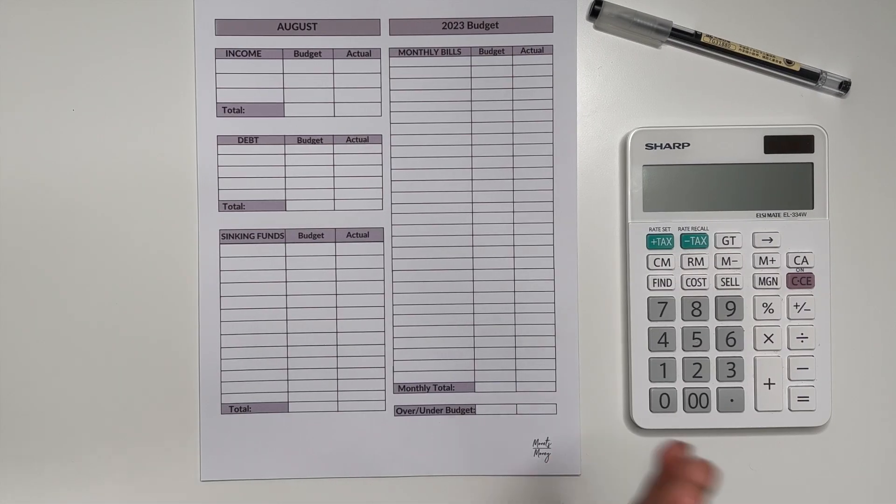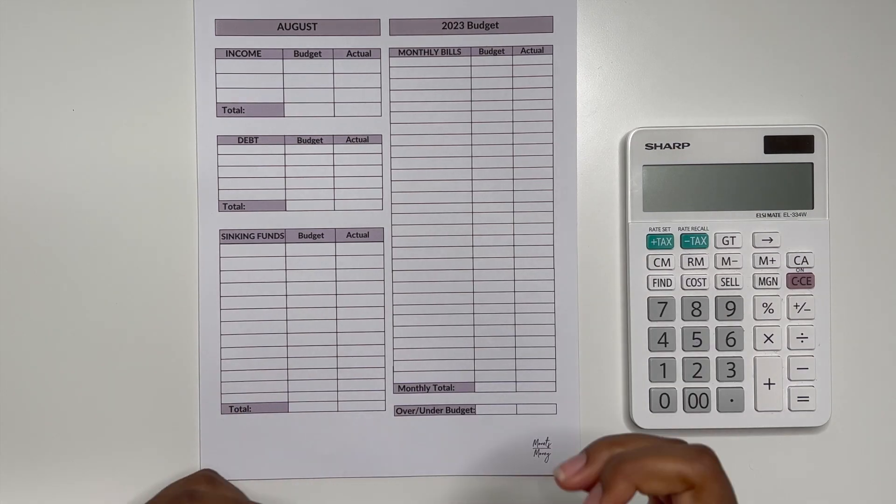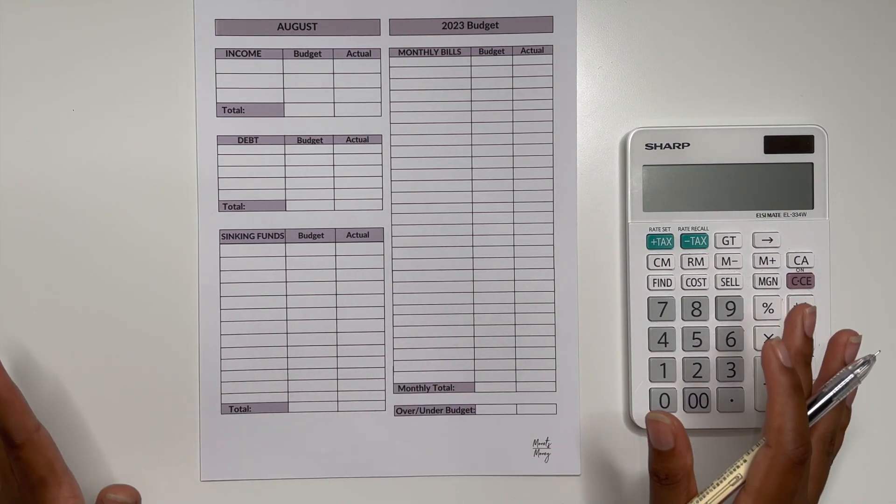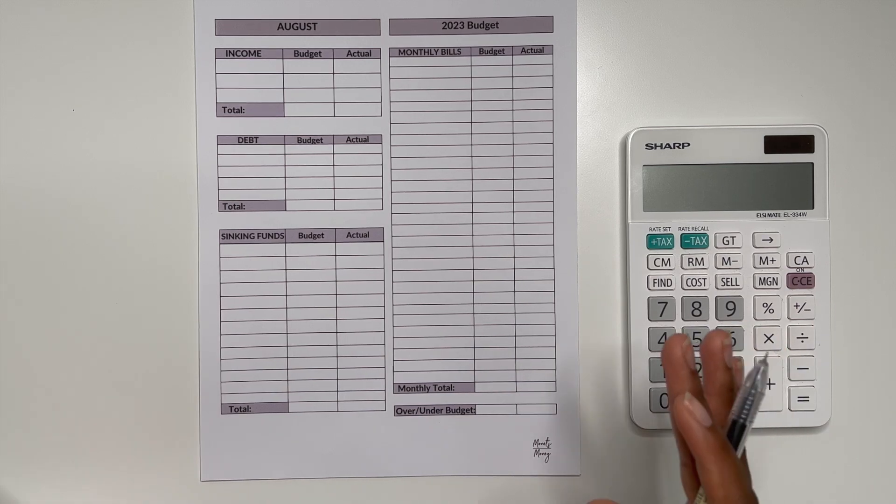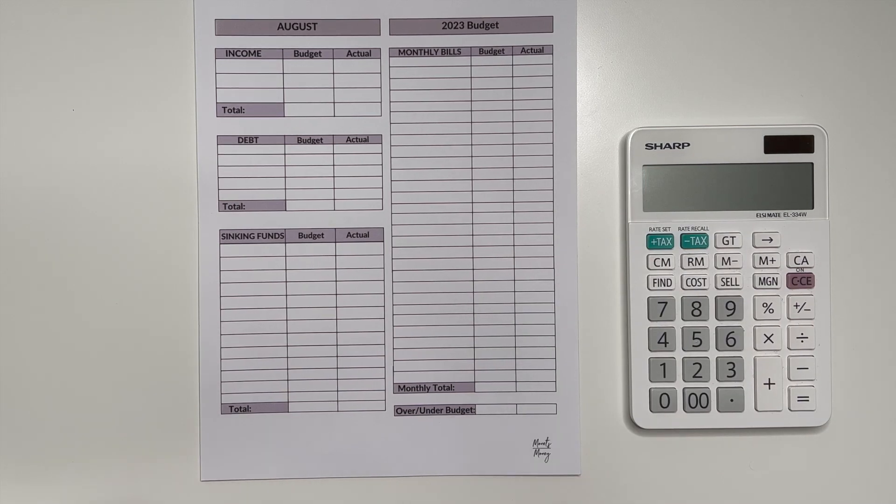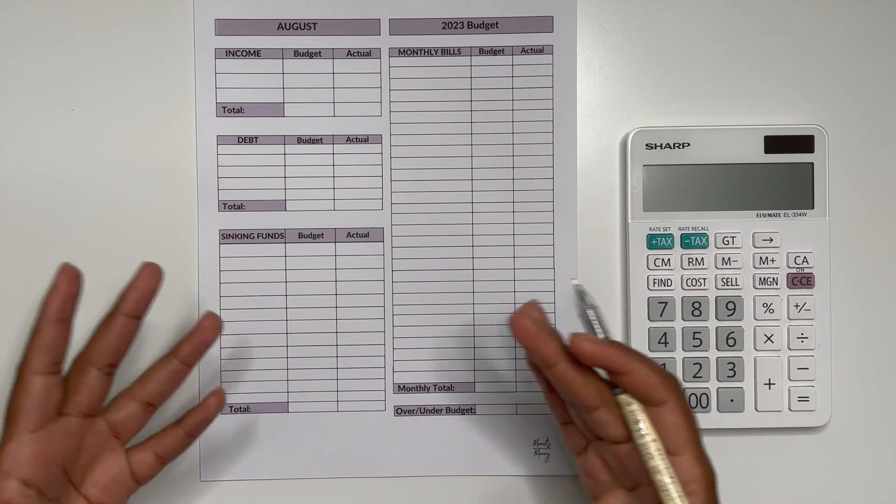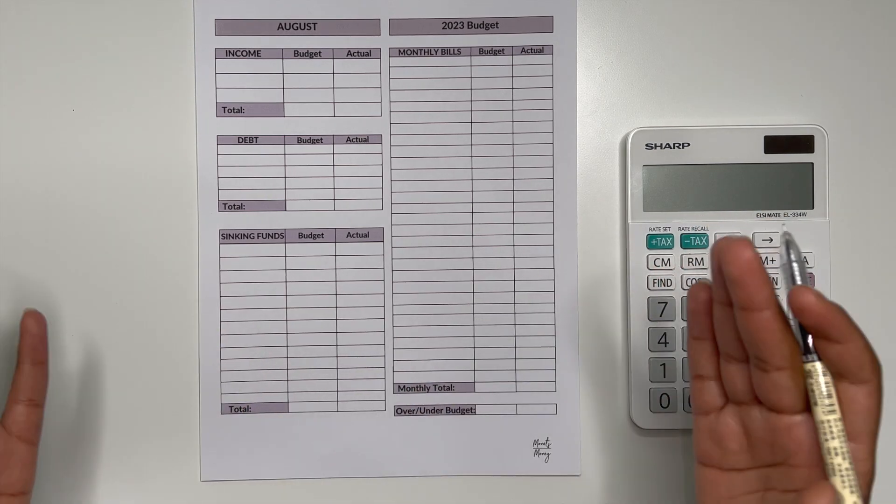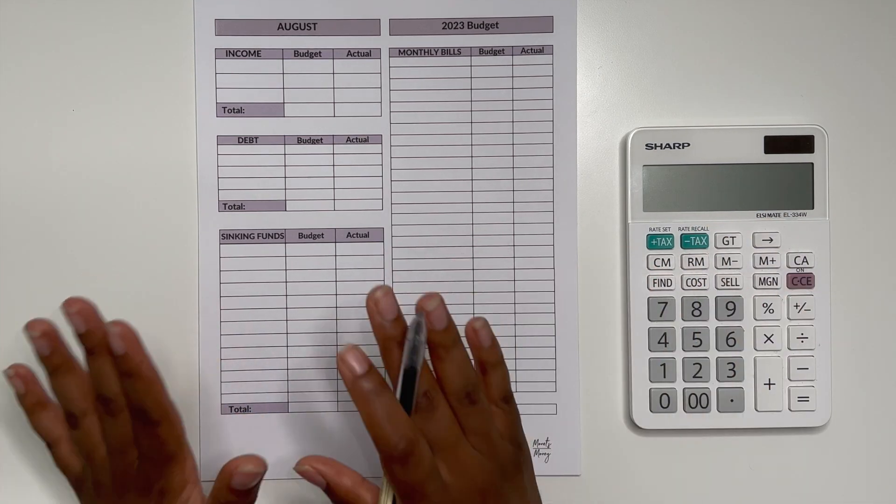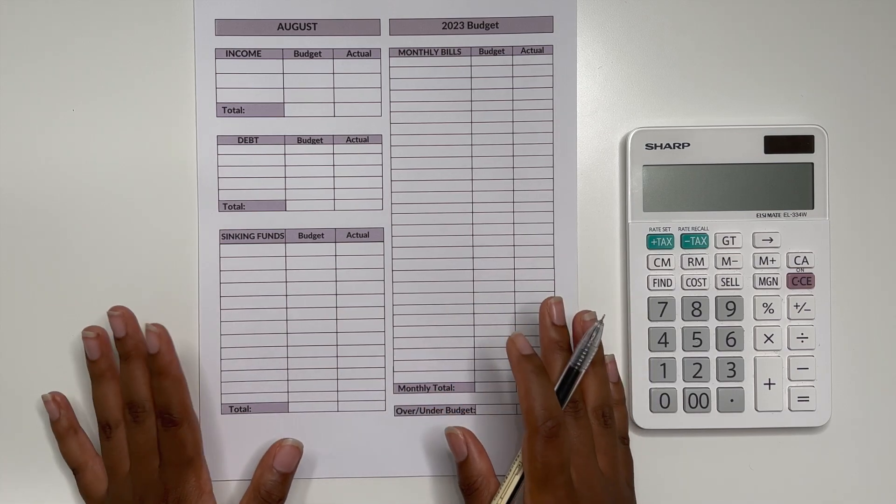Alright so now we can get down to the actual breakdown of my budget. This again is just a monthly view just to see for the month how much money I have coming in and if that money is enough to cover my bills, cover my debt, cover my savings goals. That's really what I like to use this sheet for.